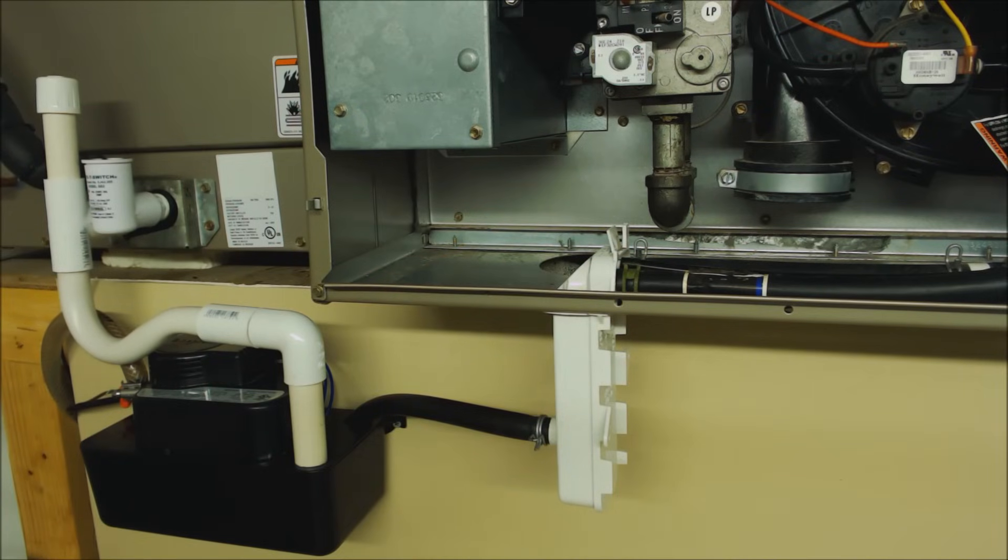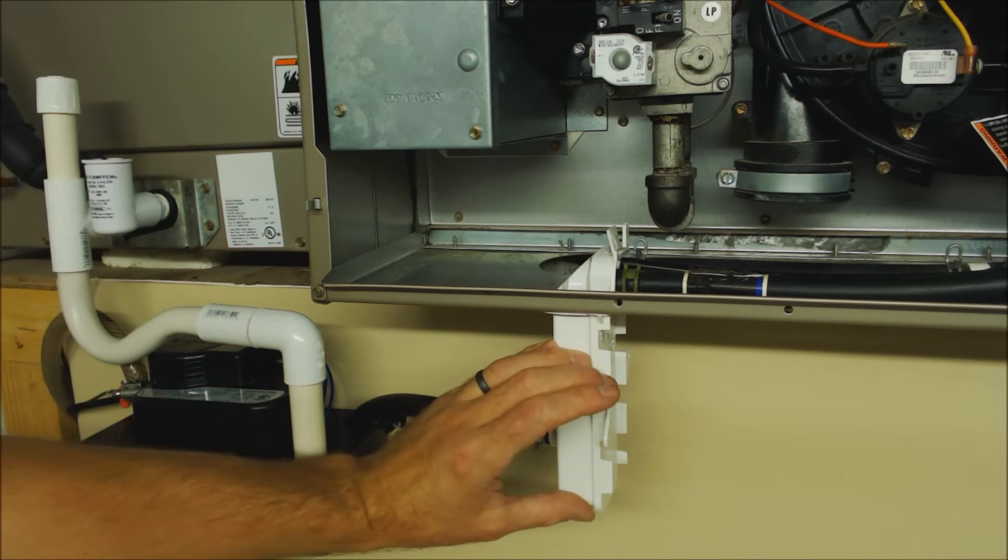I'm going to show you techniques in order to blow that out as well as to vacuum it out. The trap is usually what gets clogged in the evaporator coil for air conditioning system and then also your condensate trap for your furnace.